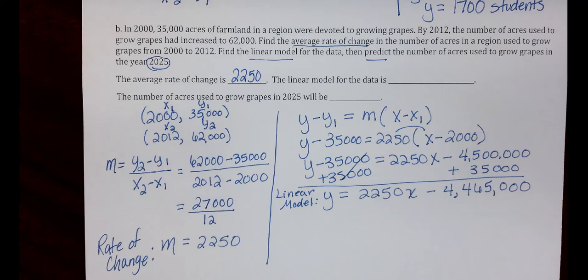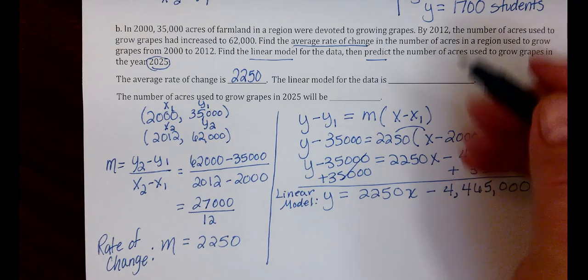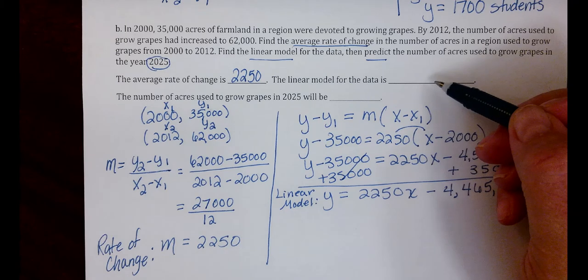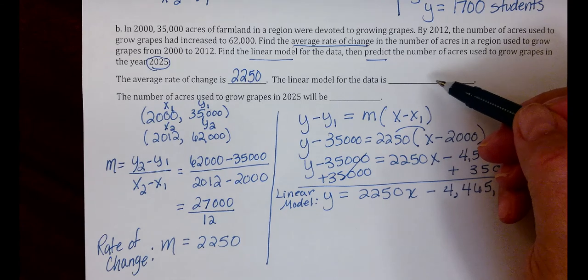Now that we have that, we can fill in the blank up here. This does not have the Y equals. If it does have the Y equals in MyMathLab, you would just write the right-hand side of the equation. If it does not have the Y equals, you have to write the entire equation.